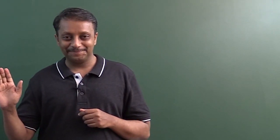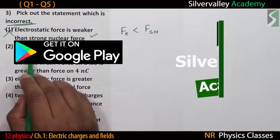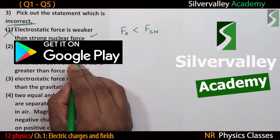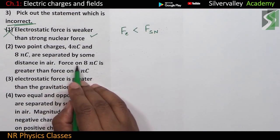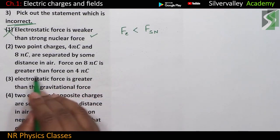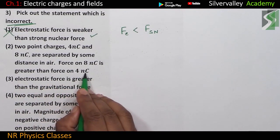Hi, Ennar here. Two point charges, 4 nanocoulomb and 8 nanocoulomb are separated by some distance in air. Force on 8 nanocoulomb is greater than the force on 4 nanocoulomb.